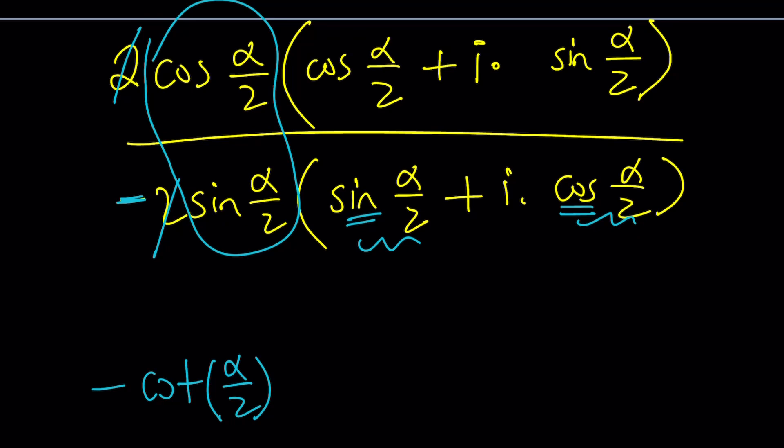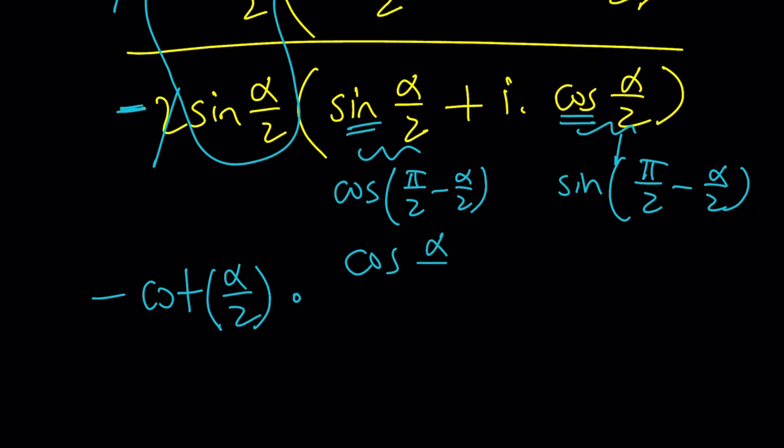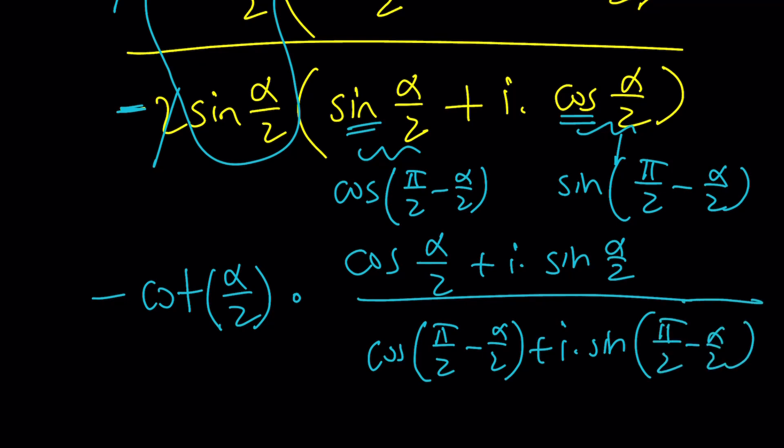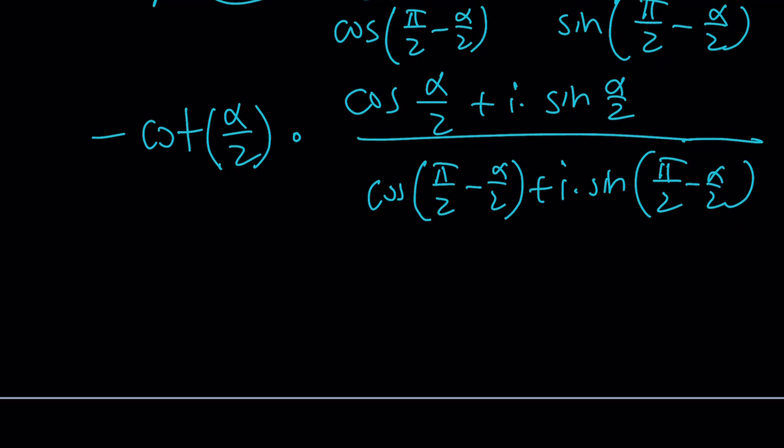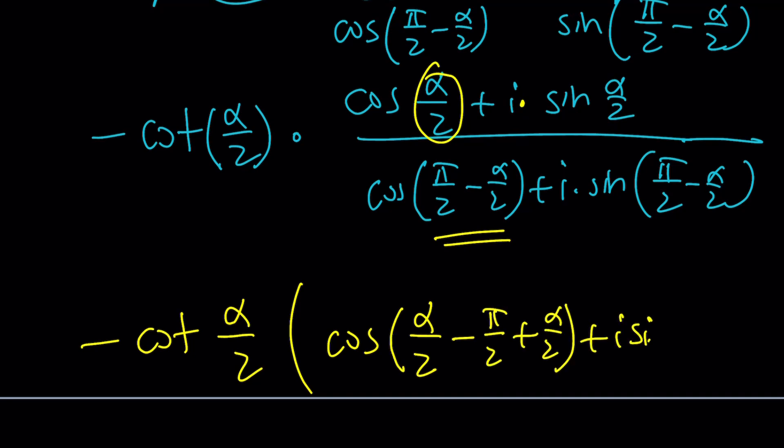I'm going to take out 2 cosine alpha over 2 because we have 2 all over the place. And then inside, I should be getting cosine of alpha over 2 plus i times sine alpha over 2. At the bottom, I want to take out a negative 2 because I want to have some positivity inside. And then inside, I'm going to be getting a positive sine alpha over 2 plus i times cosine alpha over 2.